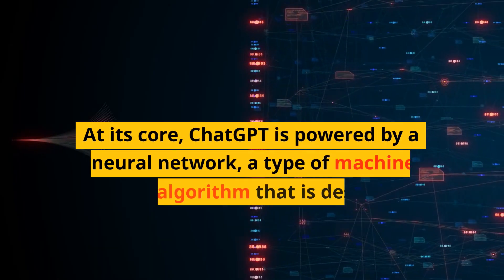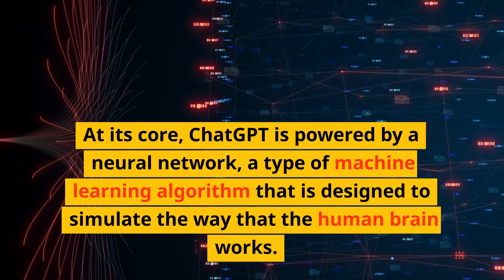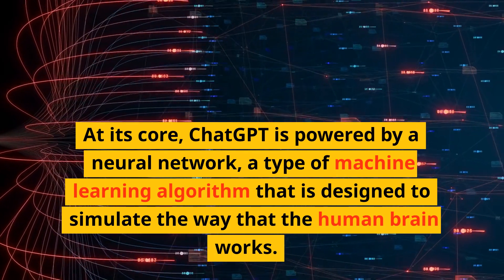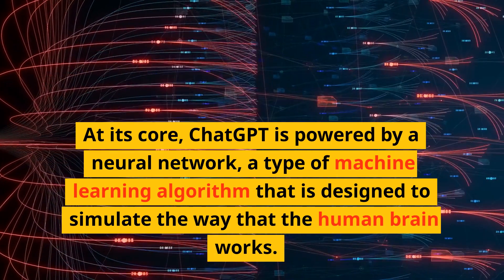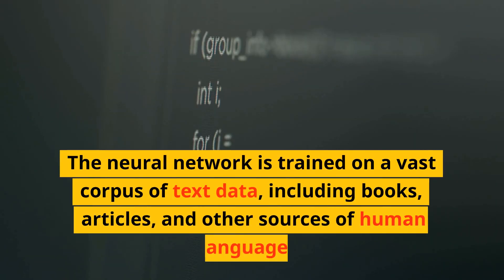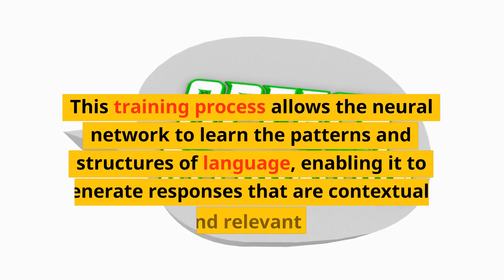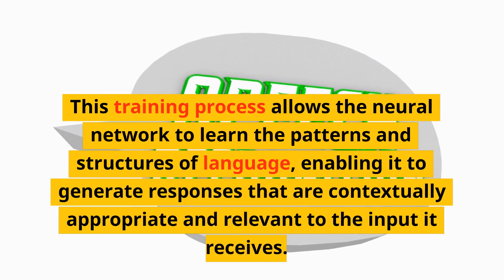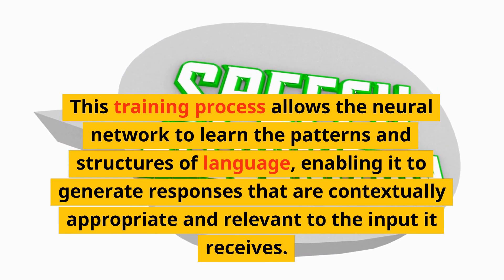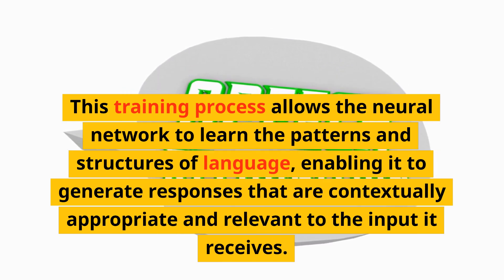At its core, ChatGPT is powered by a neural network, a type of machine learning algorithm that is designed to simulate the way that the human brain works. The neural network is trained on a vast corpus of text data, including books, articles, and other sources of human language. This training process allows the neural network to learn the patterns and structures of language, enabling it to generate responses that are contextually appropriate and relevant to the input it receives.